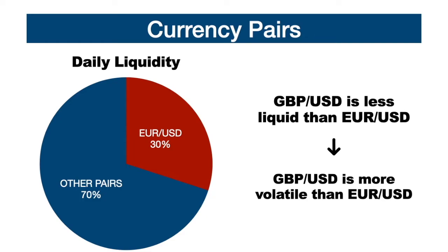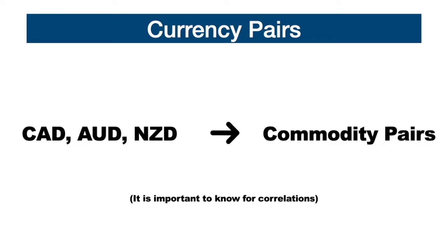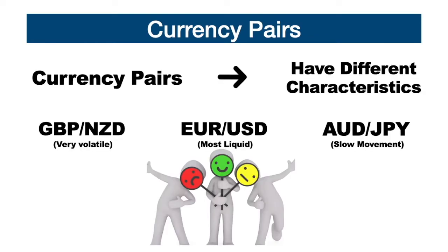The pound-dollar pair is less liquid but more volatile than the euro-dollar pair. The British pound, the Australian dollar, and the New Zealand dollar are part of the British Commonwealth and are all base currencies against the US dollar. The Canadian dollar, the Australian dollar, and the New Zealand dollar are also known as commodity pairs, because their economies are rich in natural resources. Currency pairs, like people, have their own specific and different characteristics, reflecting the different personalities of those who invest in them. All professional traders have preferences and reasons for the currency pairs they have decided to invest in.